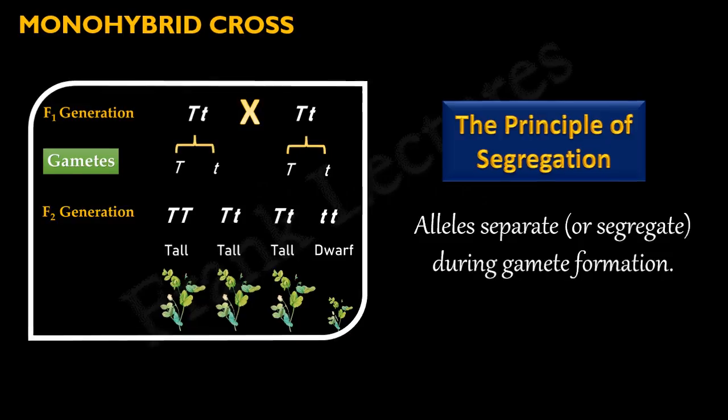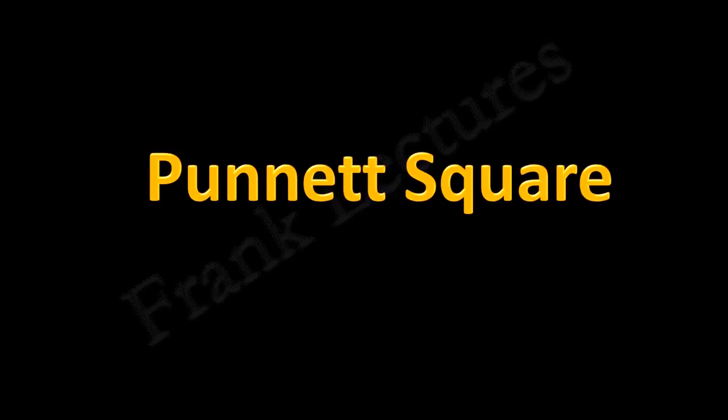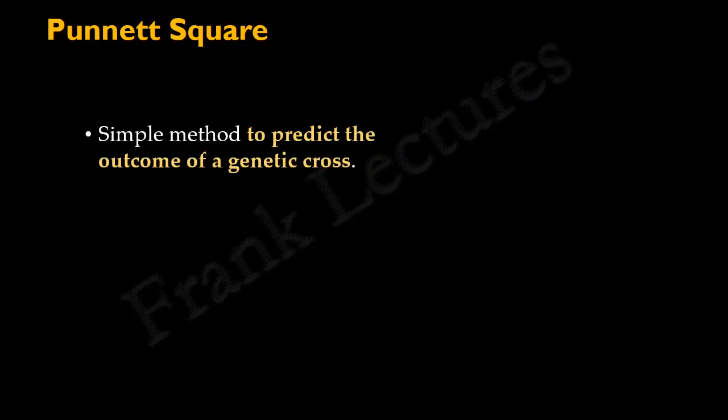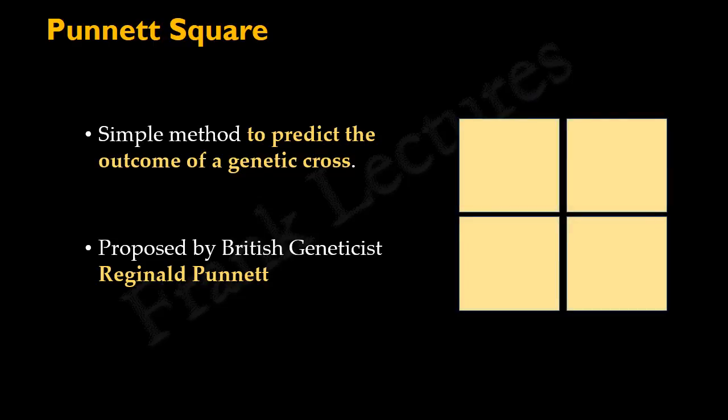Today, we will learn about Punnett Square. Punnett Square is a simple way to predict the outcome of a genetic cross. This method was proposed by British geneticist Reginald Punnett. Punnett Square is basically a diagram that consists of boxes inside a square.